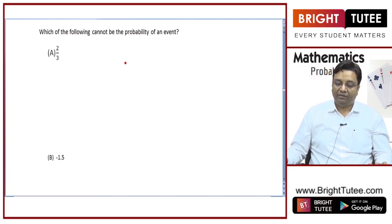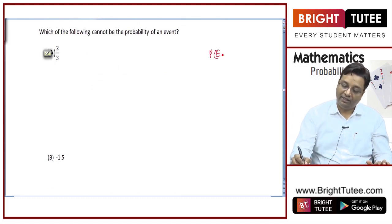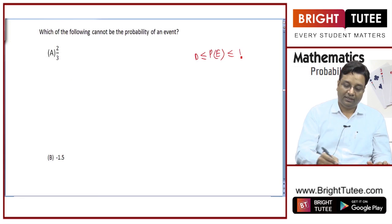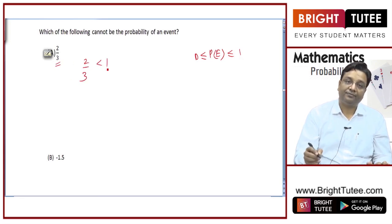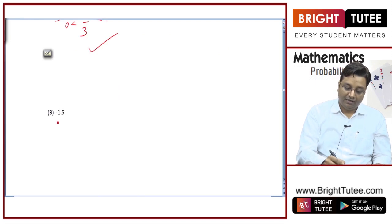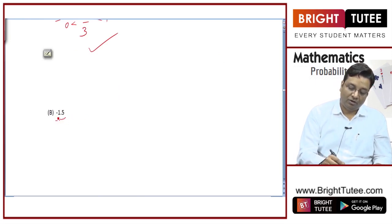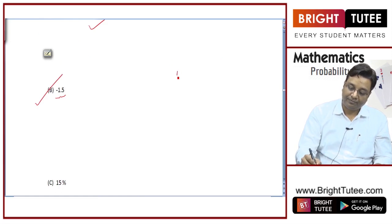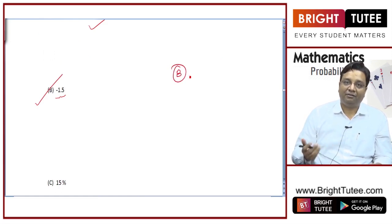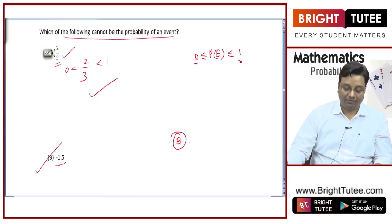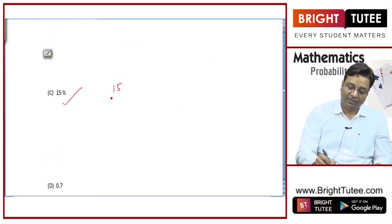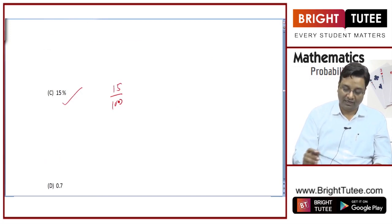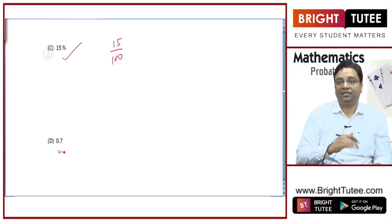Which of the following cannot be the probability of an event? We know that probability of an event is greater than or equal to 0 and less than or equal to 1. So 2/3 is less than 1 and greater than 0 — this can be the probability of an event. Probability can never be negative, so a negative value cannot be the probability. The answer is option B. 15% equals 15/100, which is below 1 and greater than 0; 0.7 is again valid.